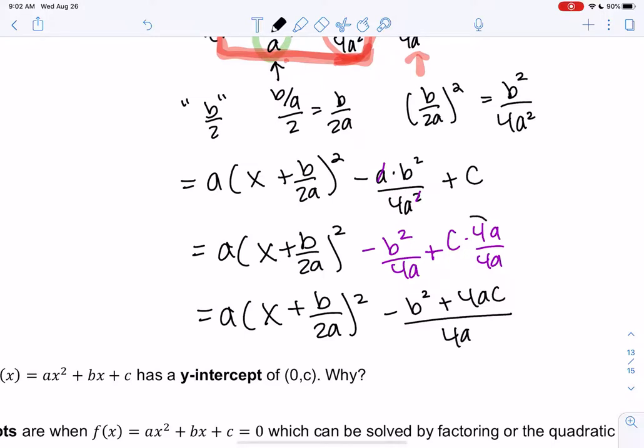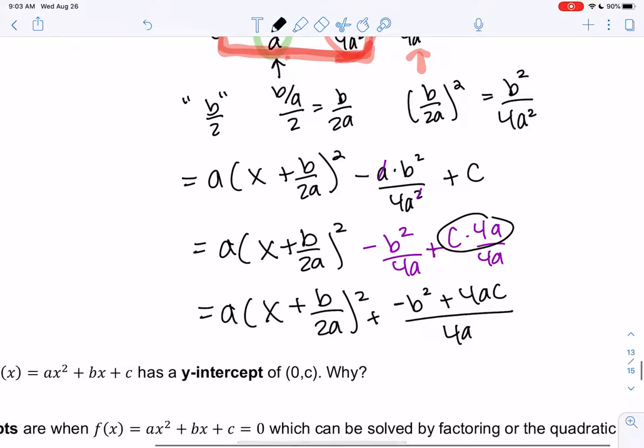And then if you hate this, you never have to do this again. So we'll get 4ac. And so we'll get b squared, negative b squared plus 4ac all over 4a. So I'm going to just make it a little bit clearer.